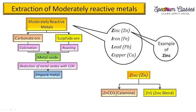Zinc carbonate is known as calamine as an ore, and zinc sulfide is known as zinc blende as an ore. You can see that zinc carbonate contains oxygen, but in zinc blende there is no oxygen. For zinc carbonate (calamine) we will go for calcination, and for zinc sulfide (zinc blende) we will go for roasting. I will again discuss what is calcination and what is roasting.